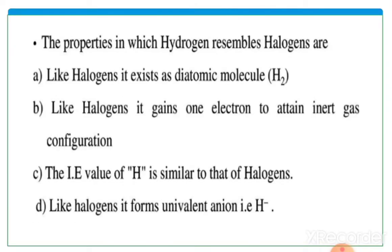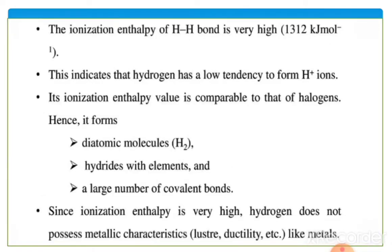Properties in which hydrogen resembles halogens: like halogens, it exists as a diatomic molecule H2; like halogens, it gains one electron to attain inert gas configuration; its ionization energy value is similar to that of halogens; and like halogens, it forms a univalent anion, that is H minus. The ionization enthalpy of the H-H bond is very high — about 1312 kJ per mole — indicating hydrogen has a low tendency to form H+ ions.